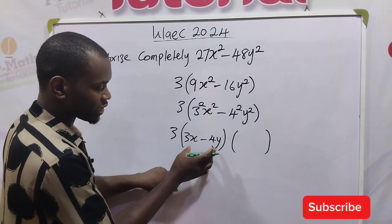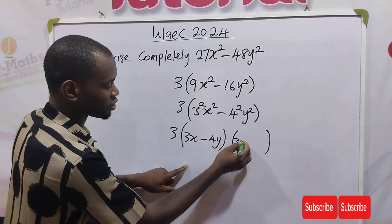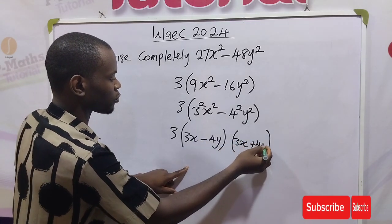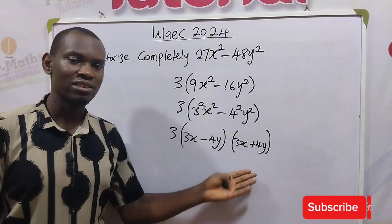Then over here, we write the same thing but change this to plus. We have 3x plus 4y. We have factorized completely.